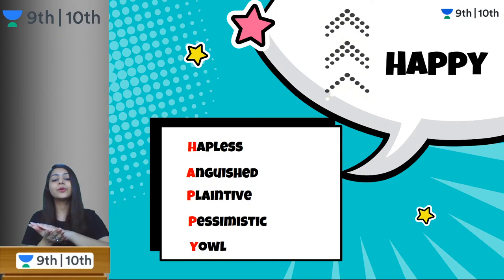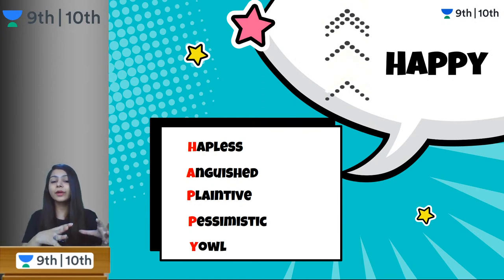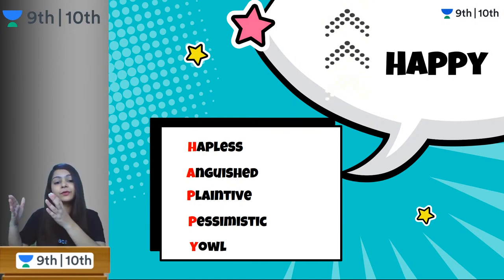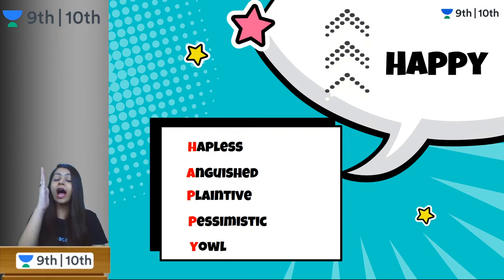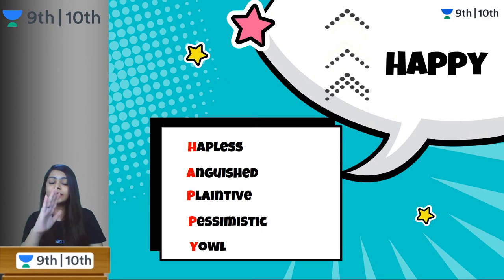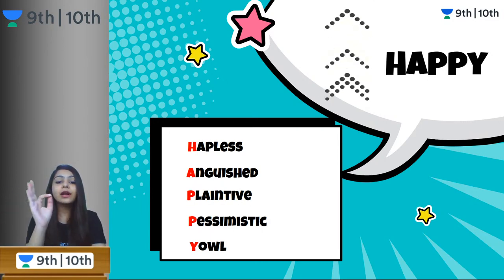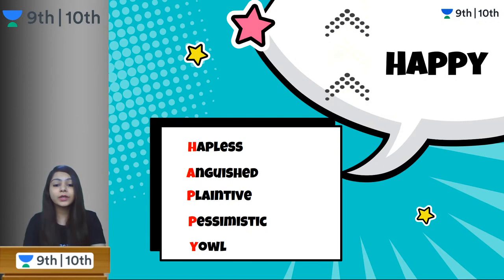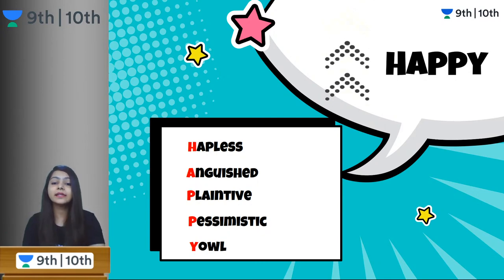Now we are going to go away from HAPPY — all these words are going to be negative with happy. H for hapless — somebody who is misfortunate. A for anguished. P for plaintive. The next P is pessimistic. And Y is yowl.